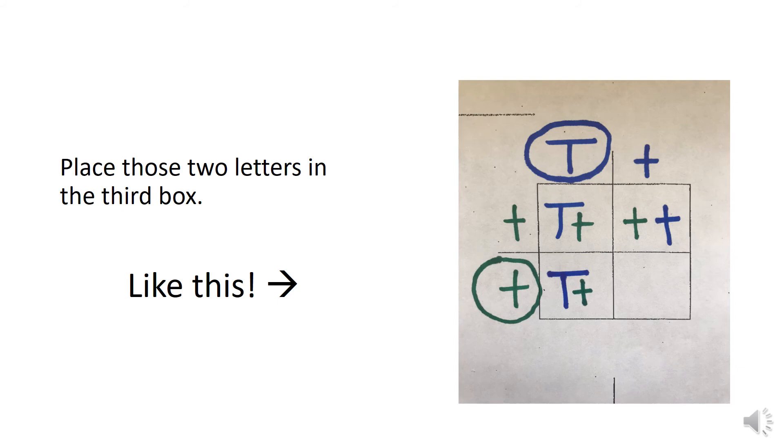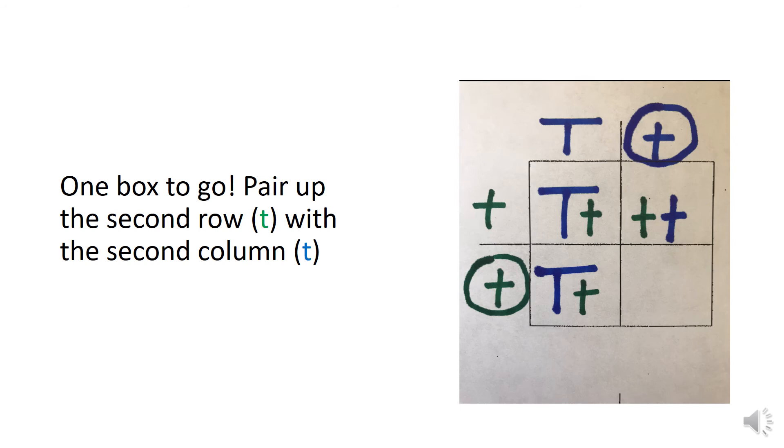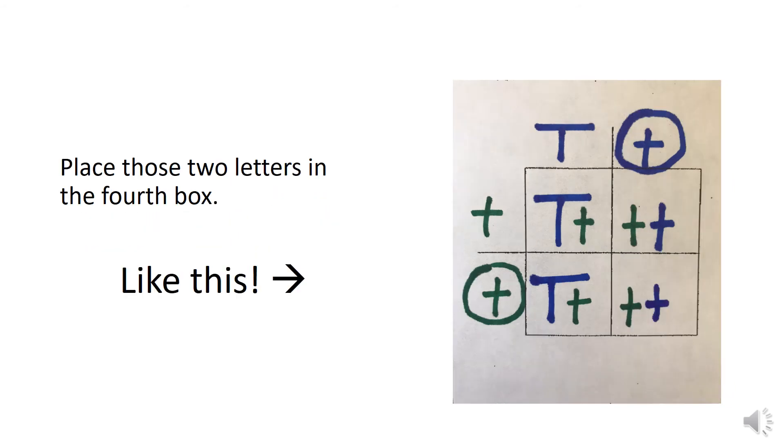One more box to go, one more box to go. Pair up the second row lowercase green t with the second column lowercase blue t. Place those two letters in the fourth box.